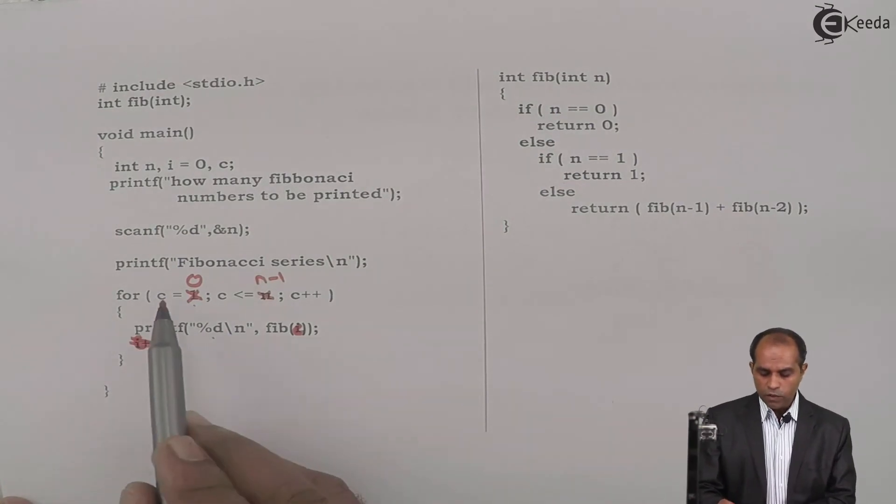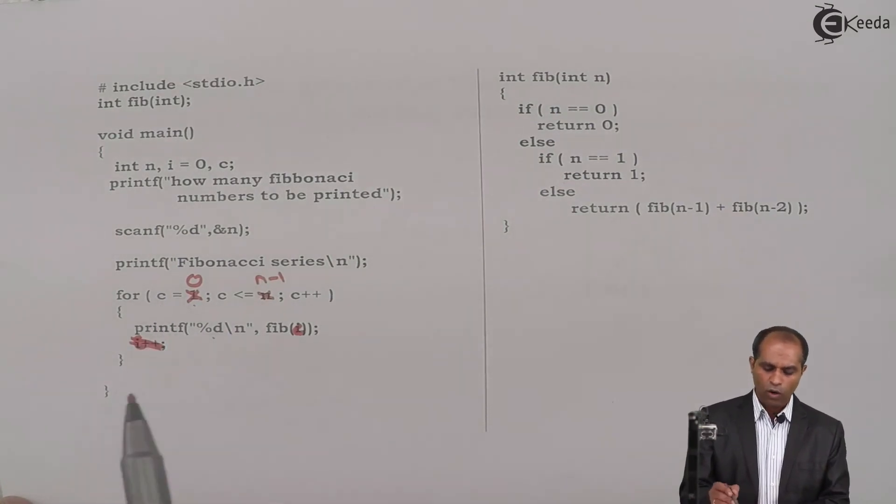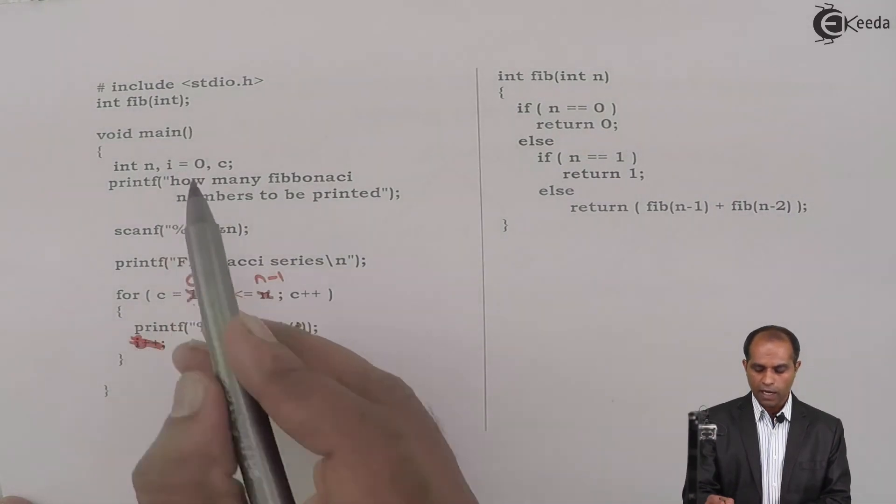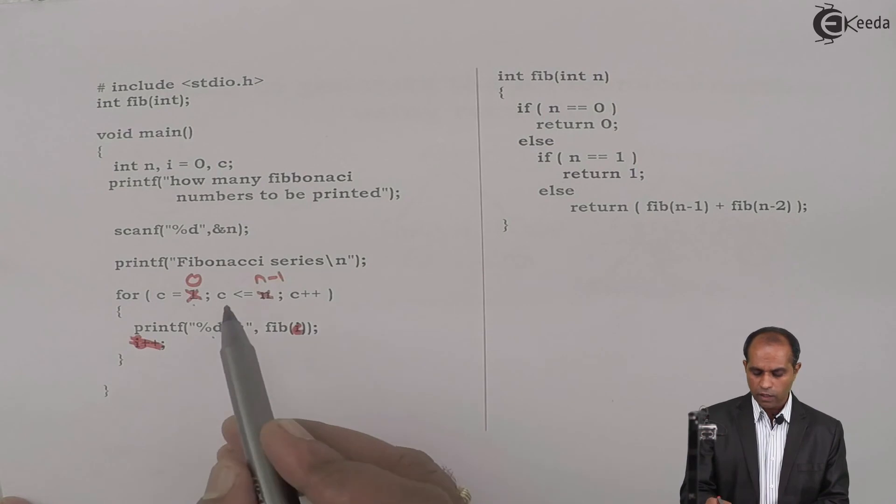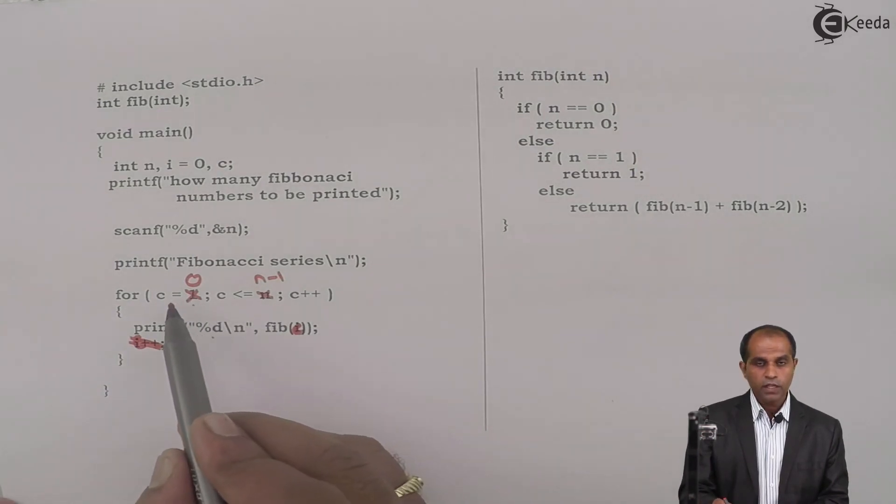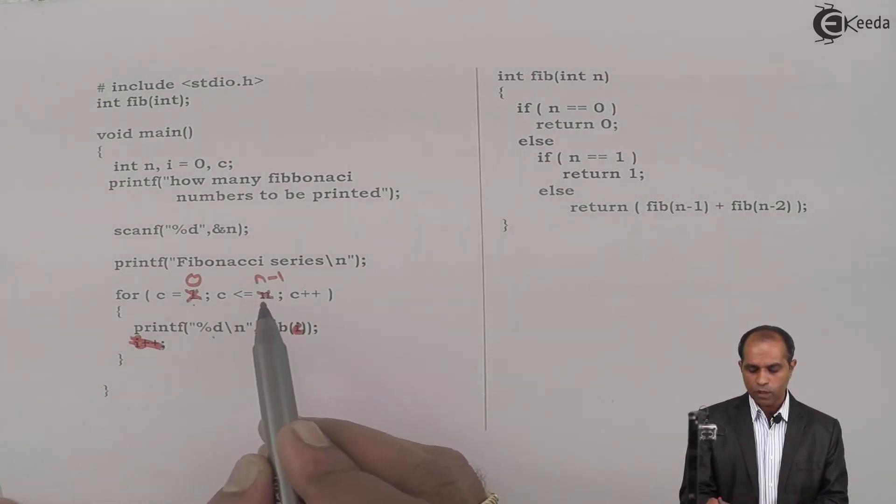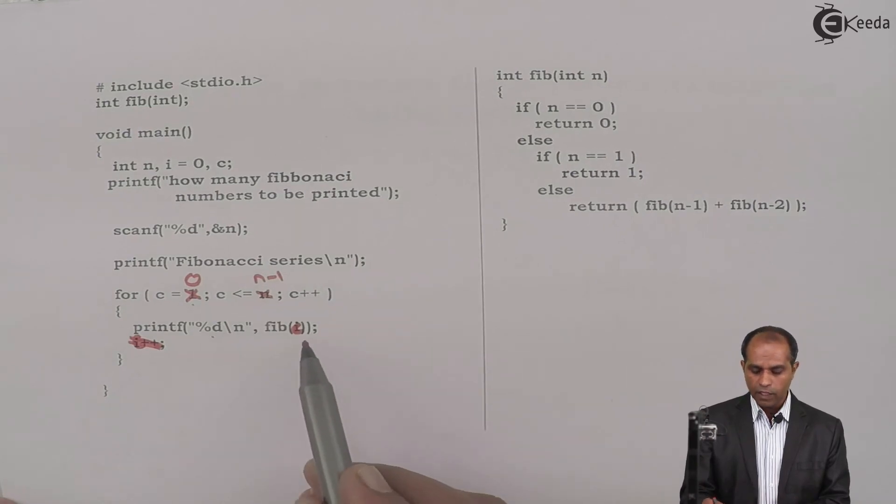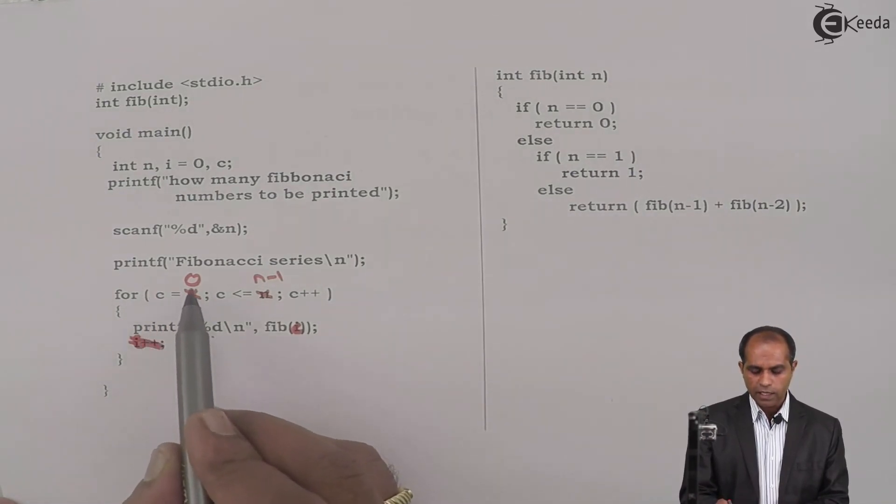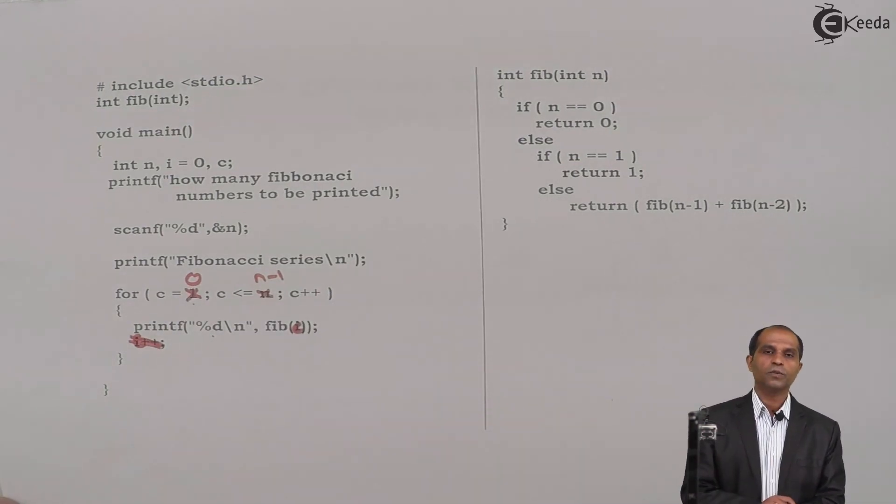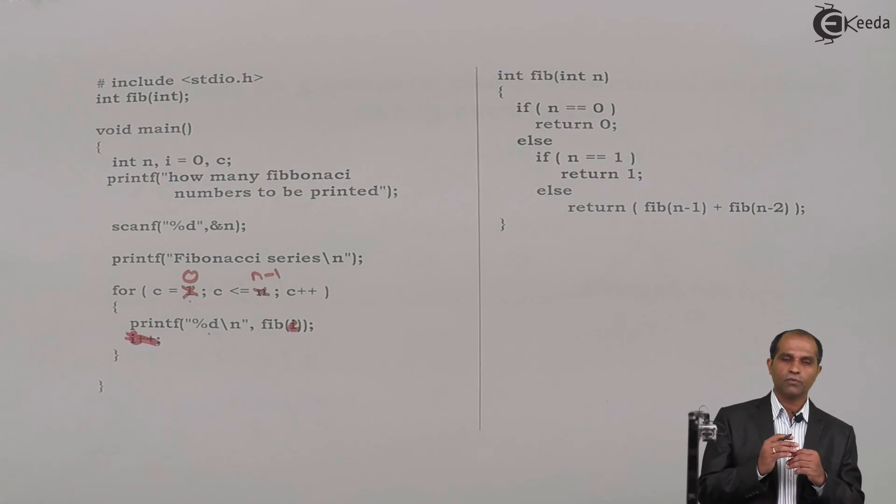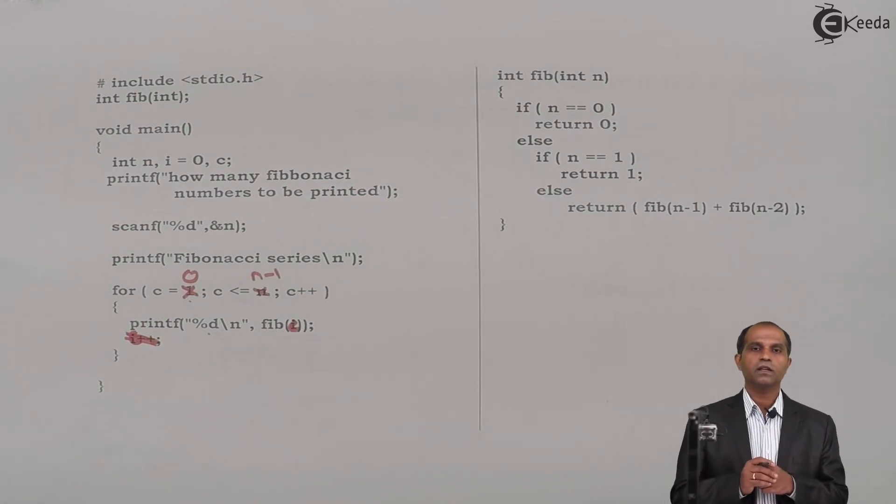You can use the counter itself as a variable for c, or you can take i as a number, i is 0 and Fib of i and then i plus plus. Both would have worked. Even c would have worked. If c had been used, then c has to start from 0 and go till n minus 1, c plus plus. We'll be able to generate the Fibonacci series using this particular recursion process.